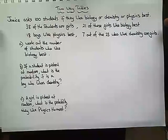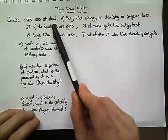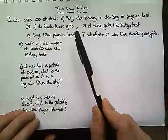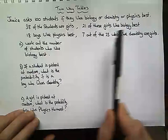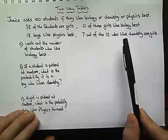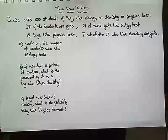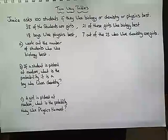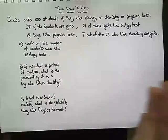Janice asks 100 students if they like biology, chemistry, or physics best. 38 of the students are girls, 21 of these girls like biology, 18 boys like physics best, and 7 out of the 23 who like chemistry are girls. What we can do is draw up a table to represent all of this information. We're going to have two variables: boys and girls, and biology, chemistry, or physics.